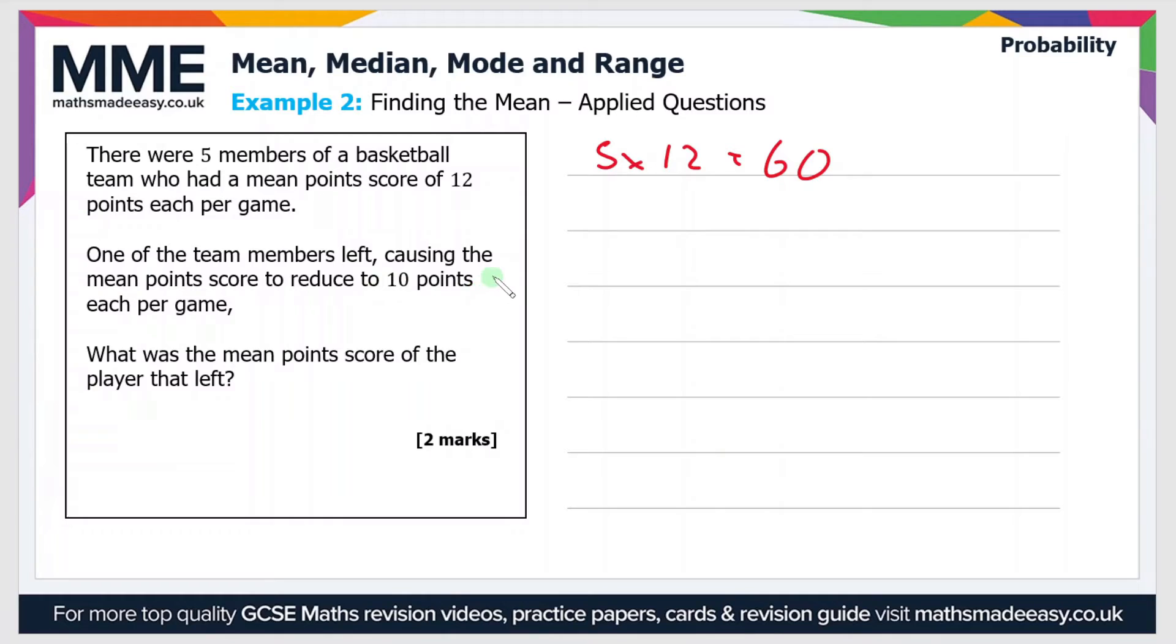Now if this member left and the points was reduced to 10 points each per game then the new total score if you like is 4 times 10. So there's now four members as one is left and the mean is 10. So that gives a value of 40. So the difference between these two is the number of points or the mean point score of the player that left. So that's 60 minus 40. So that is 20. So the mean point score of the player that left was 20.